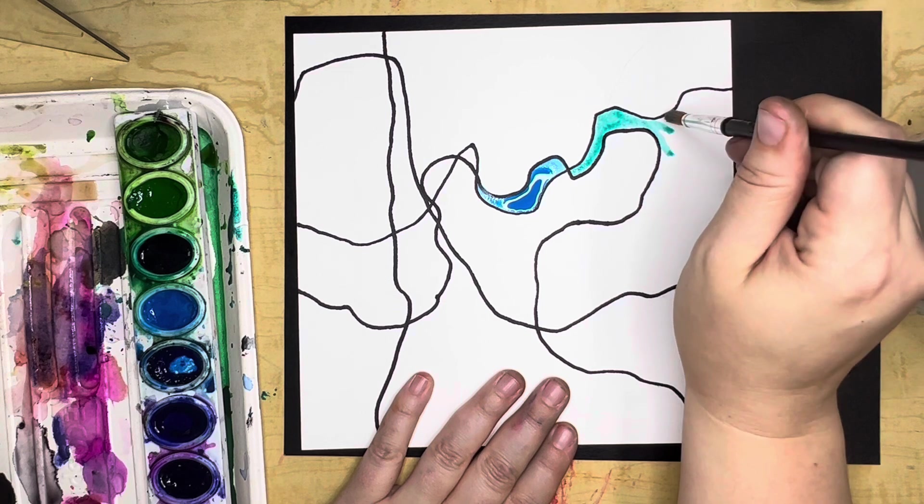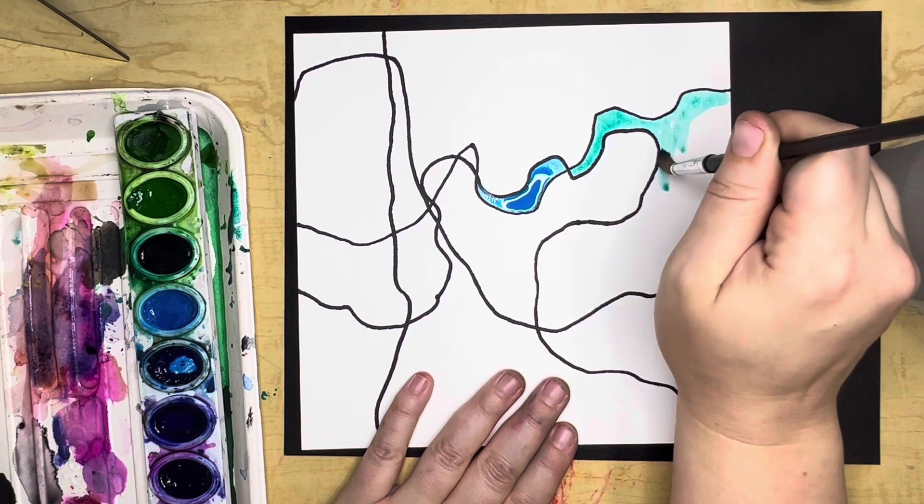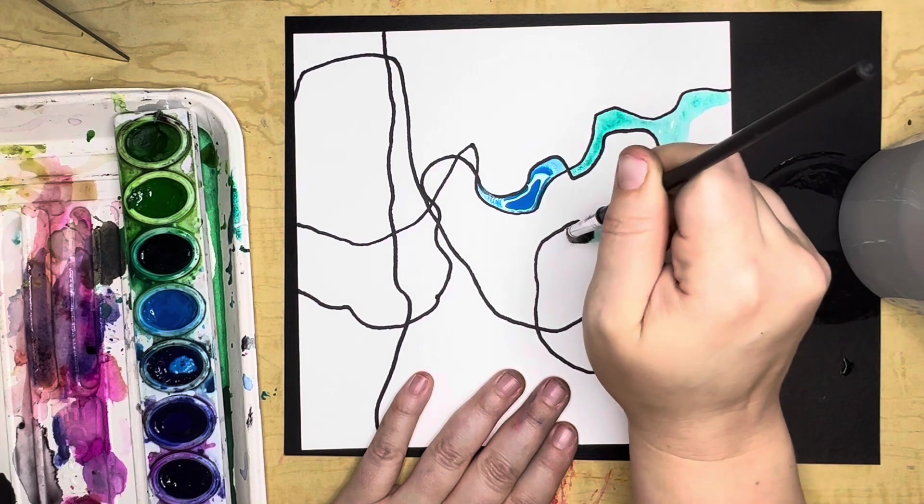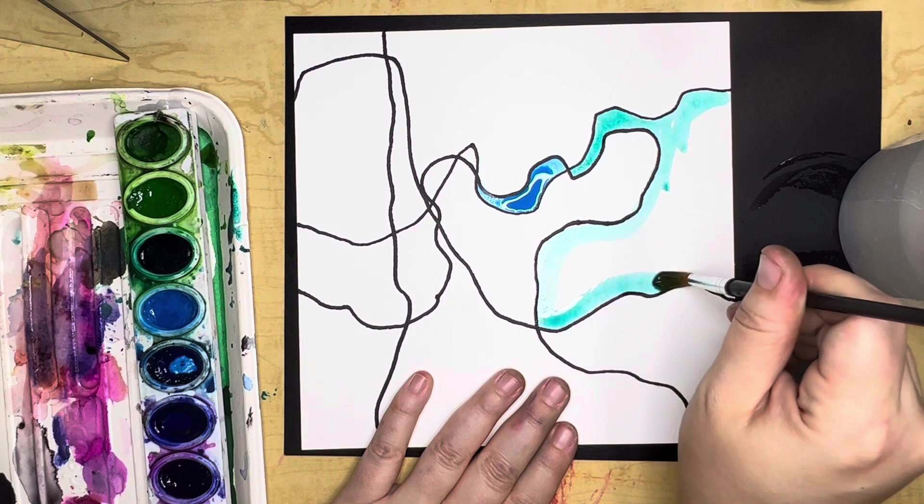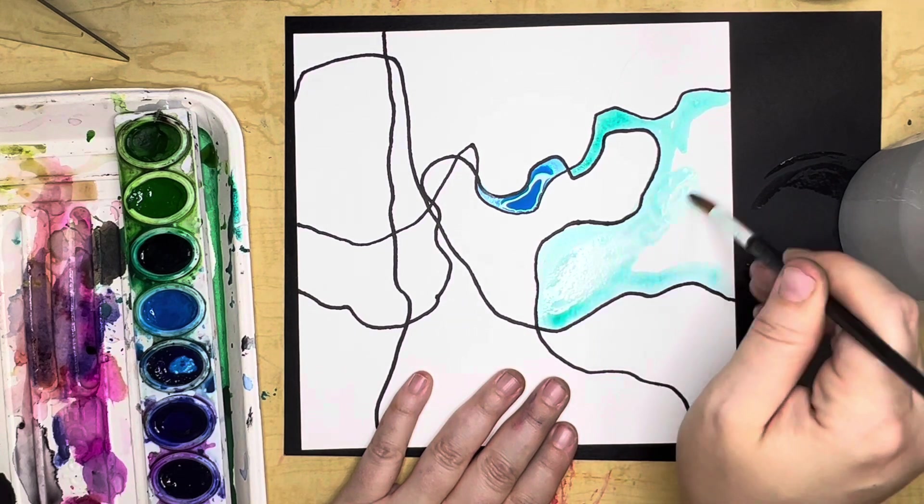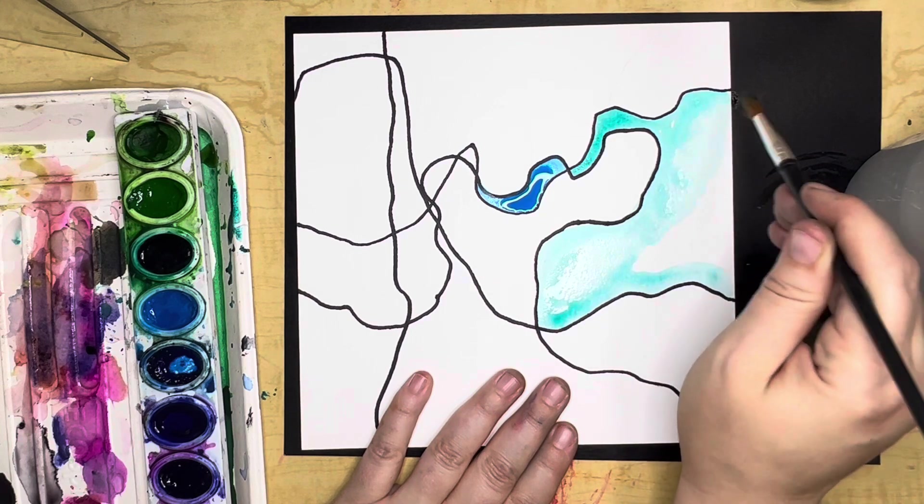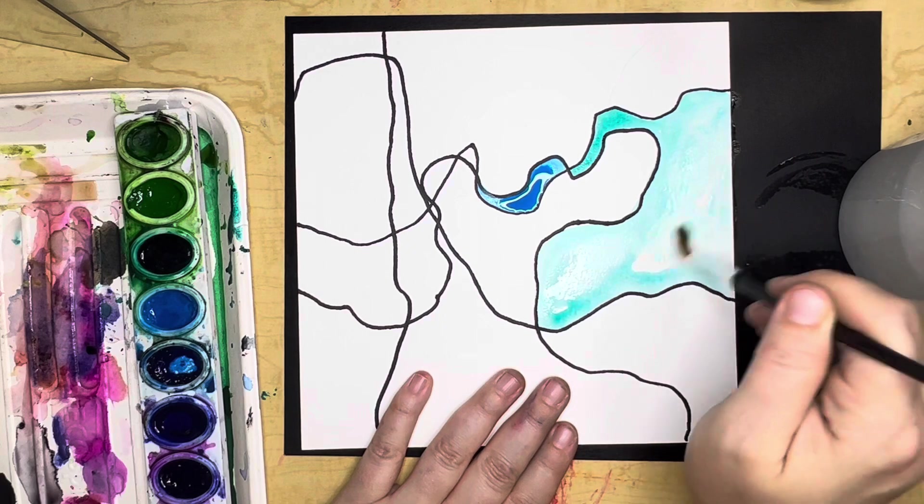And then you'll use the tip of your brush to fill in the nooks and crannies, and then you can press your brush a little bit further while you fill out the middle of a shape. So there I am using the body of the brush a little bit more to fill in that larger shape with the color.